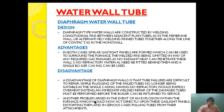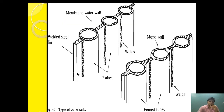Another problem arises in the event of an explosion within the furnace, which would act directly upon the gas-tight panels, distorting them and in serious cases pulling out the tubes from the attachment. If the tubes are pulled out of the attachment, complete damage results and the whole membrane wall tube needs to be replaced.